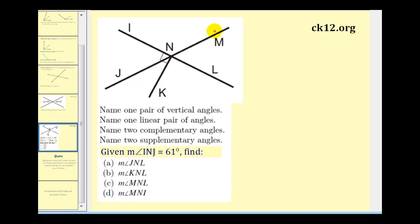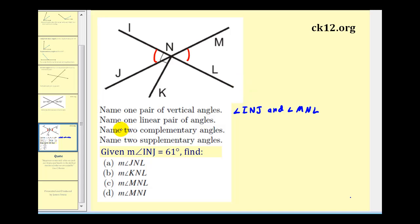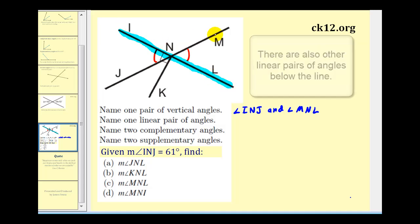Let's take a look at this last problem. The first question is to name one pair of vertical angles — we're looking for two angles formed by two intersecting lines that are not adjacent. So angle INJ and angle MNL are vertical angles. The next question asks to name one linear pair of angles. The two angles that form this straight line would be angle INM and angle MNL.